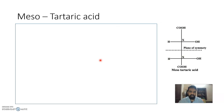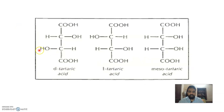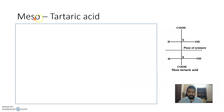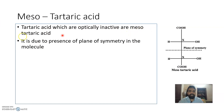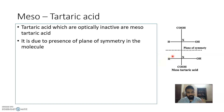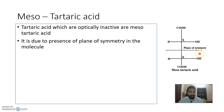Mesotartaric acid is optically inactive due to the presence of a plane of symmetry in the molecule. You can see that the molecule has an identical upper and lower half — one half is the mirror image of the other. Because of this internal plane of symmetry, the molecule is optically inactive despite having chiral carbons.